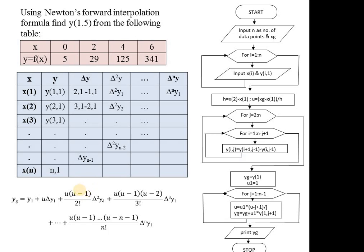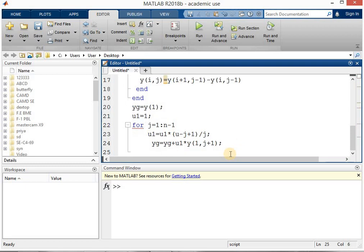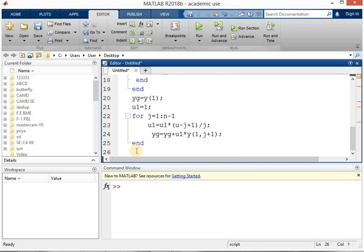When J equals 2, U1 becomes U1 multiplied by (U minus 2 plus 1) divided by 2, giving the 2-factorial term. In this way all U1 values and the YG value are calculated through the loop. After writing this, we end the loop. Then we print the value of YG using fprintf syntax.